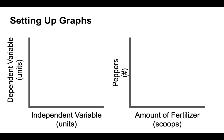With our graphs, we want to make sure we set them up on a consistent basis as well. When we set up our graphs, on the x-axis — the horizontal, side-to-side axis — that's where we put our independent variable, and once again the units are underneath in parentheses. On the y-axis, the up-and-down axis, we put the dependent variable with its units. So on the x-axis we have the independent variable — amount of fertilizer in scoops — and on the y-axis we have the number of peppers.